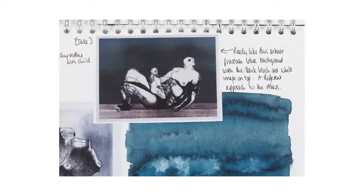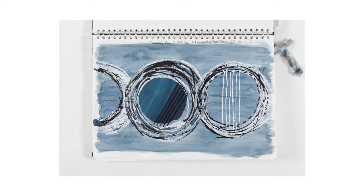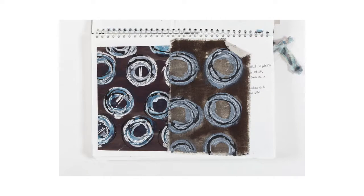For example, here she's picked up on an element from one of Moore's drawings. She's looked at a particular shape and explored it through a range of different media and materials. She's blown up the scale and seen the effect that that has on her own drawings. She's then started to put it into a repeat using stitch to create emphasis and as a drawn line.